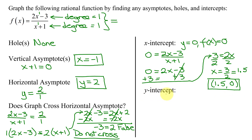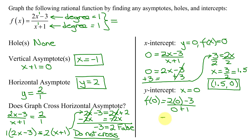Lastly, I need to find the y-intercept. You do that by setting x equal to 0. So f of 0 equals (2 times 0 minus 3) divided by (0 plus 1). That is (0 minus 3) divided by 1, which equals negative 3 divided by 1, which is negative 3. So my y-intercept is at the point (0, negative 3).